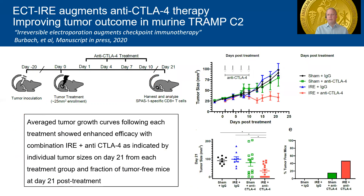As mentioned earlier, there is a huge advent of new research in the processing of electrochemotherapy with immune checkpoint inhibitors. This study was done looking at murine models using an inoculation in the hind limb of mice. We used a TRAMP model, which is a prostate model, to specifically look at antigen release and CD8 T-cells, which would have a specific signature to that antigen profile.